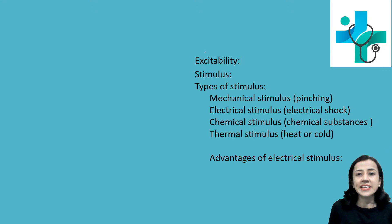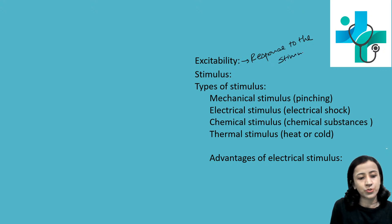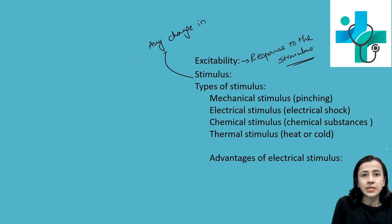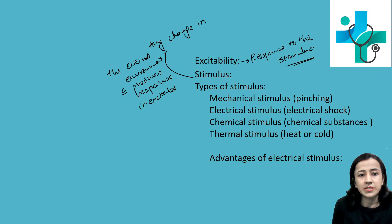Excitability means the ability of tissue to give a response to a stimulus. When any tissue is stimulated with a stimulus, it will give a response — this is the characteristic of living tissue. Stimulus is any change in the external environment which produces a response in excitable tissue.